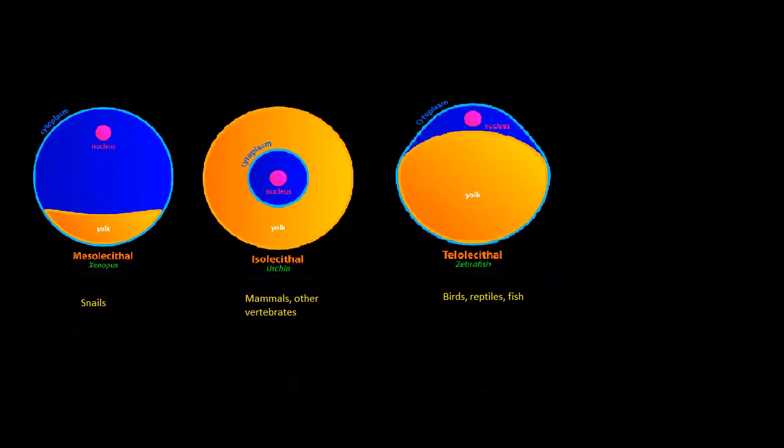So let's go check about the yolk. So there are three types of yolk you could have in a species. There's mesolecithal, isolecithal, and the telolecithal.